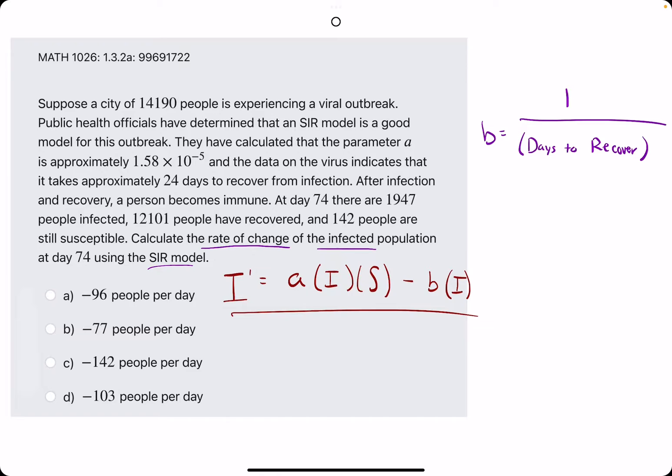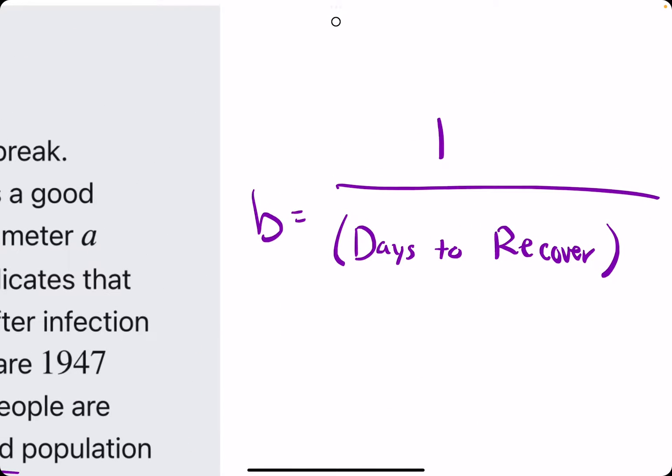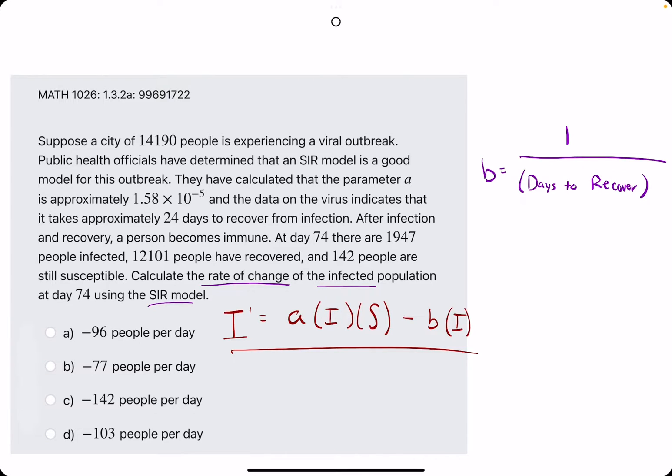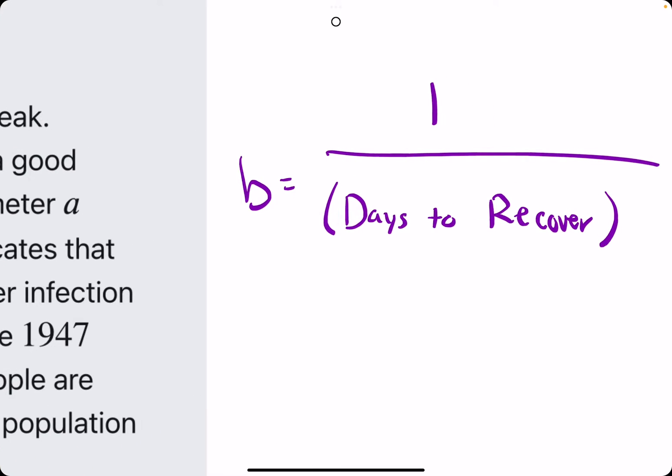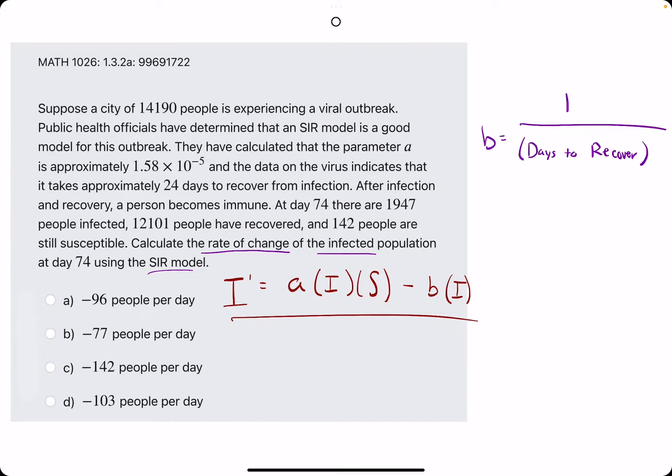And to help us find this, we will reuse the B equation that we used in the past that says B is equal to 1 divided by the days it takes to recover. So let's go ahead and find B. It says that it takes approximately 24 days to recover from infection. So 1 divided by 24 will be our B value.